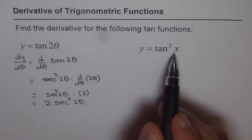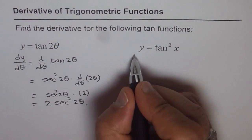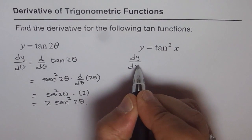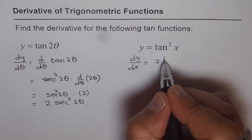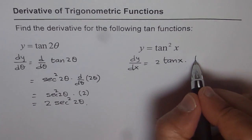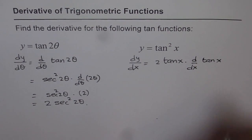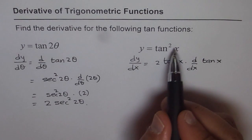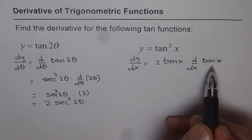y equals tan² x. The derivative should be with respect to x, so we write dy/dx equals 2 tan x times d/dx of tan x. We use the power rule first. The function is tan x, so we have to find the derivative of the function also.